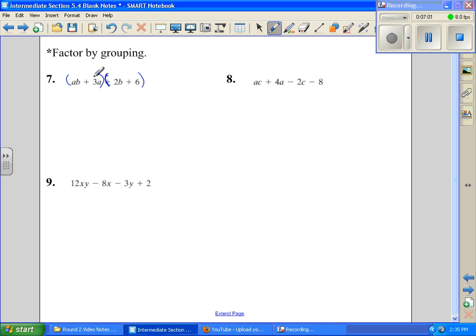Just looking at the first one, they both have an A. If I divide an A out of this term, I have just B left. And if I divide an A out of this term, I have a 3 left. Now I want to focus on my second parenthesis. These two terms both have a 2 in them. So I'm going to say plus 2, a positive 2. And if I divide this one by a positive 2, I have a B left. And if I divide this by positive 2, I have a 3 left.